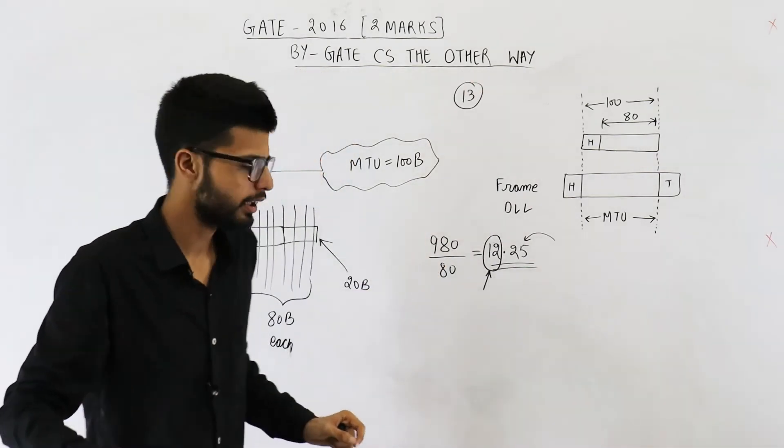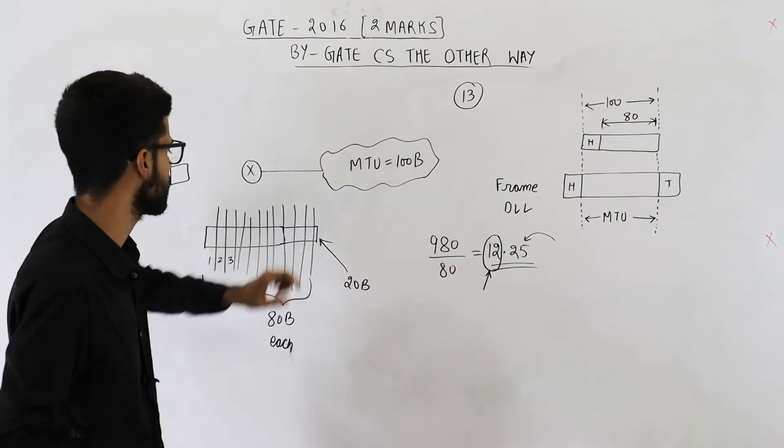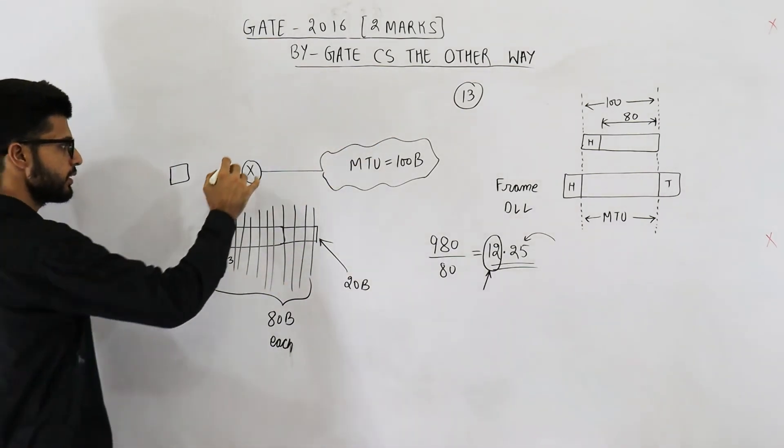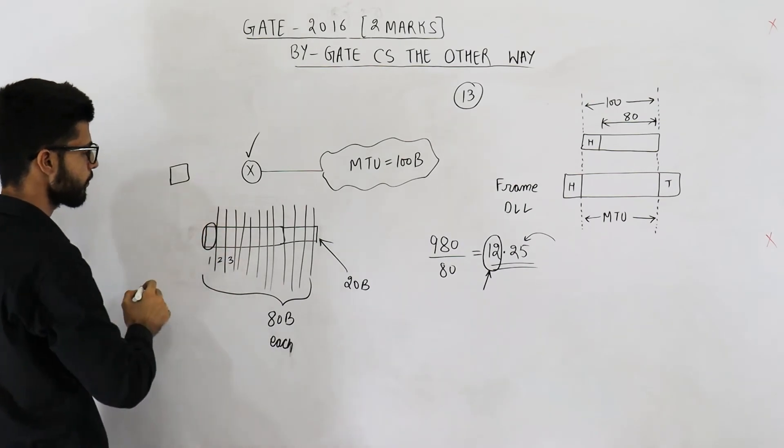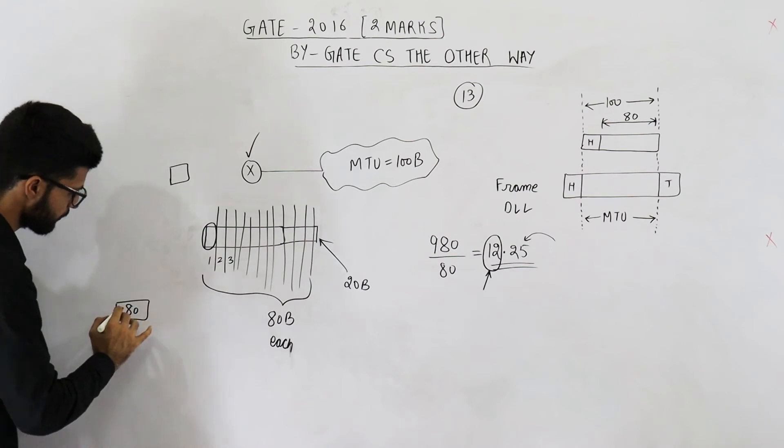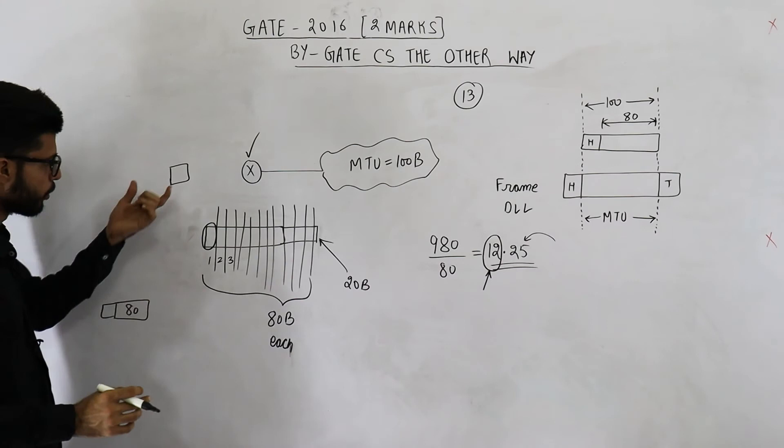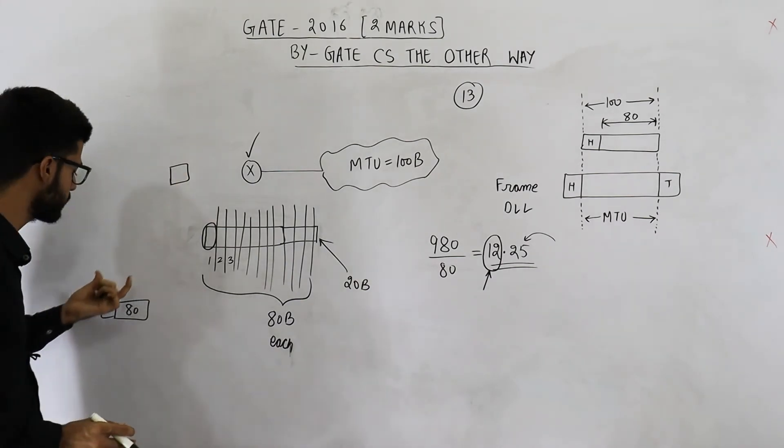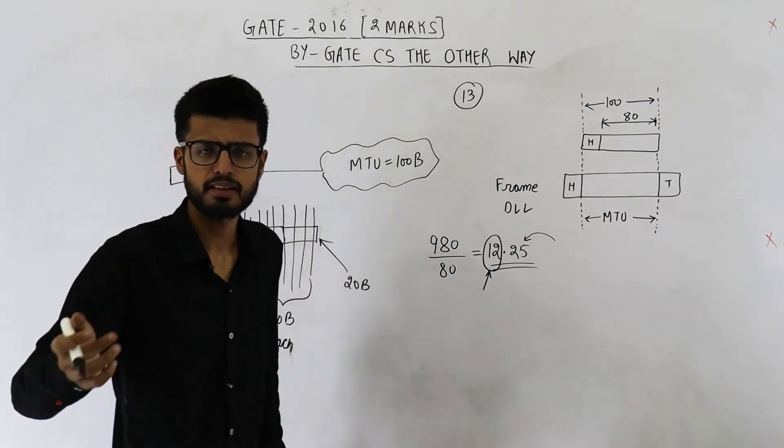Now I would like to explain few more things, you can skip the video if you want to. We have got our answer. Now this router will take this data of 80 bytes, suppose this is the 80 byte data, the first fragment, it will add this header on this fragment and send it.